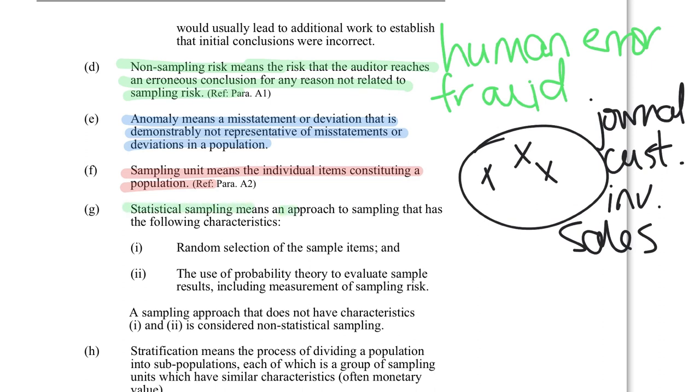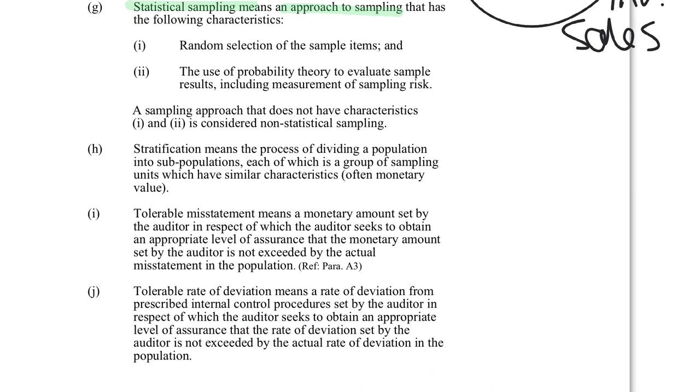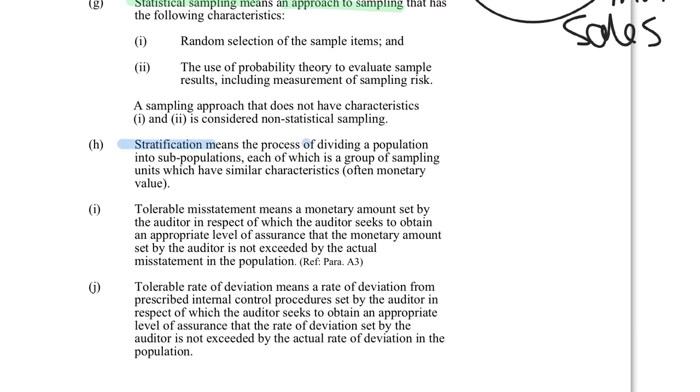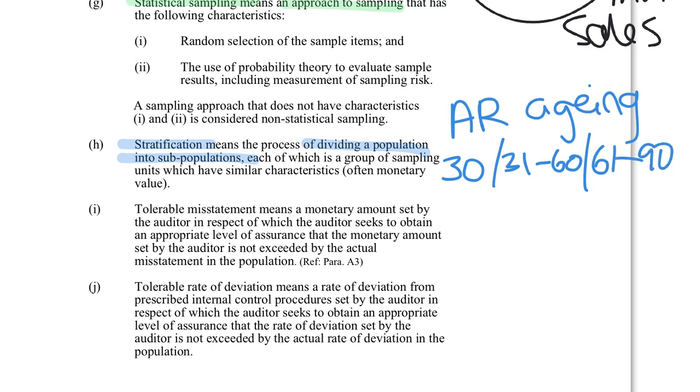Now we're moving into some other definitions. Statistical sampling is just a method of sampling and in the appendix, I think it might be appendix four, it talks about a number of different options and statistical sampling is one of those. I'm just going to scroll down here. We also have the term stratification. So this is dividing a population into subpopulations. The most common one that we see there is when we do something called aging accounts receivable. And when we age an accounts receivable, we divide it into ones that are less than 30 days, transactions that are 31 to 60 days, 61 to 90 days and 90 days plus. And we'll do that because we're trying to find perhaps bad debts. So we would look in this particular area. Now you don't always have to stratify, but it is useful if you think that there are different subgroups that might have different characteristics.